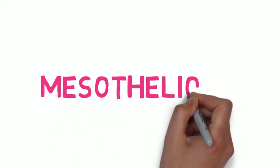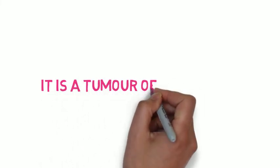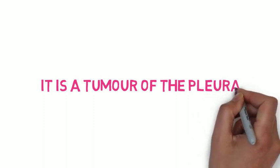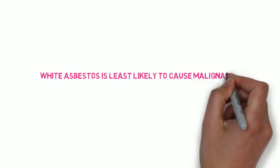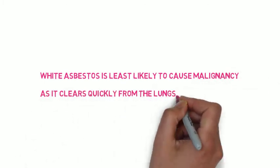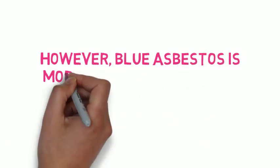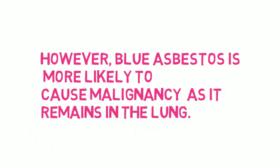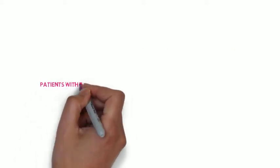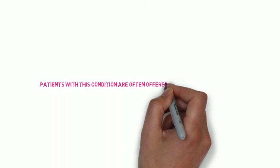A cancer linked to asbestos is mesothelioma. This is a cancer of the pleura of the lung. It has a very poor prognosis and the average survival is about 12 months. White asbestos is least likely to cause malignancy, as it clears very quickly from the lung. However, blue asbestos is very likely to cause mesothelioma, as it tends to remain in the lung. Patients with this condition have a very poor prognosis and are typically offered palliative chemotherapy.